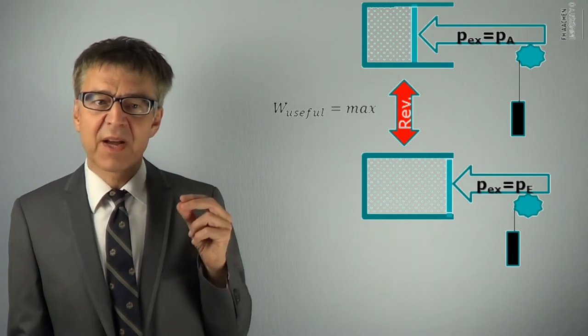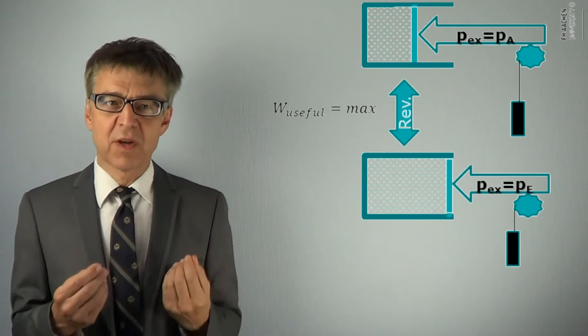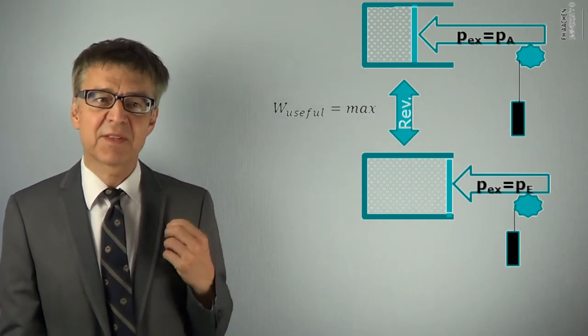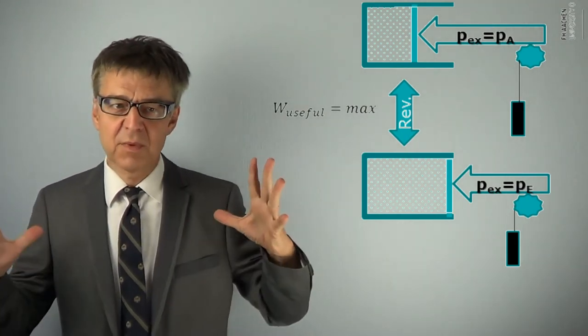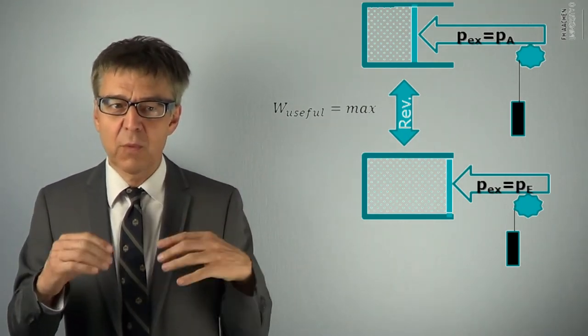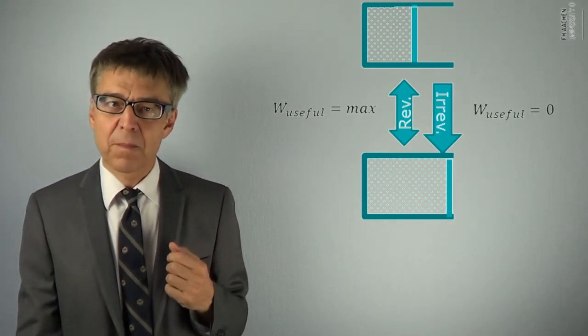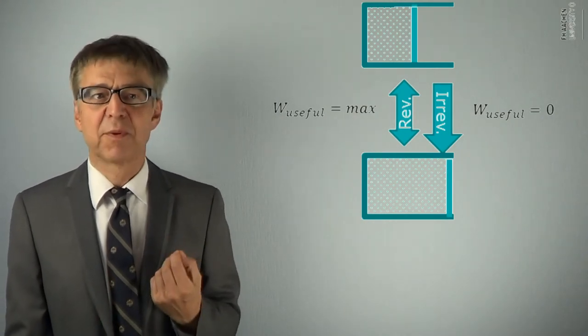The process is reversible, because this maximum amount of work we gain and save, this gravitational work, is sufficient to compress the system to its initial state, without changing anything else in the surroundings. The reversible path is the opposite of the spontaneous path.